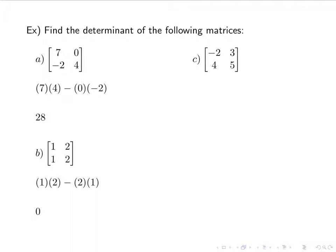Here's another one: negative 2, 4, 3, 5. Negative 2 times 5 minus 3 times 4 — again, we're making that X when we do it. We get negative 10 minus 12, which is negative 22.